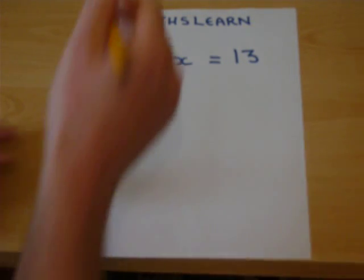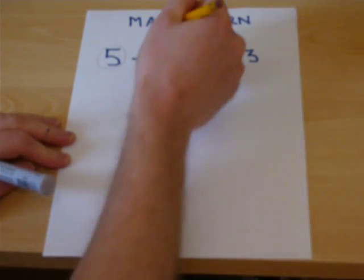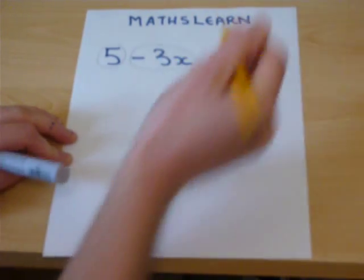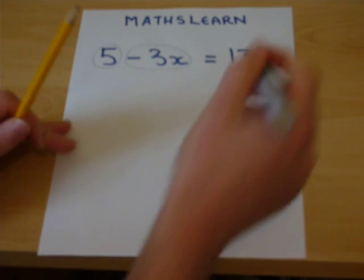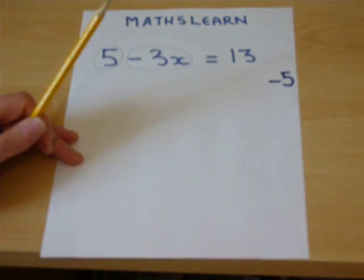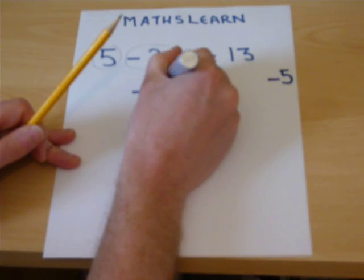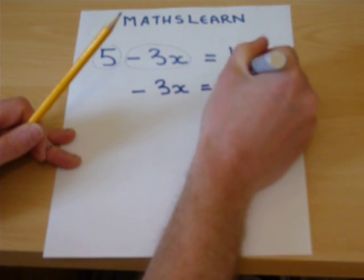We have a plus 5 and a minus 3x, so if we subtract 5 from both sides, we end up with minus 3 lots of x equals 8.